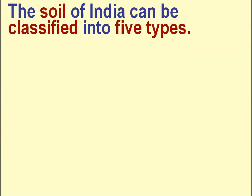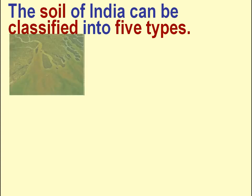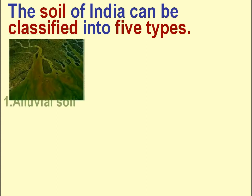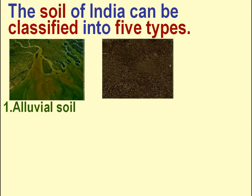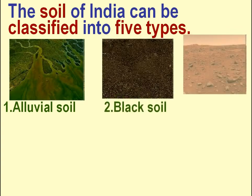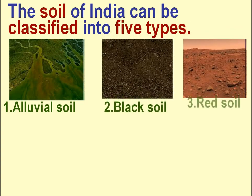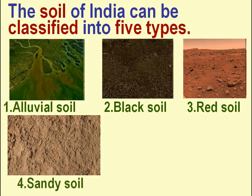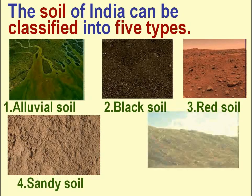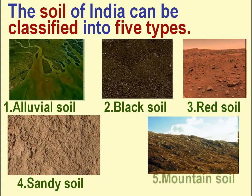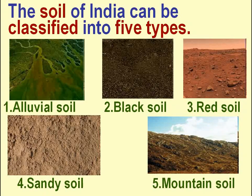The soil of our country can be classified into five types: alluvial soil, black soil, red soil, sandy soil, and mountain soil.